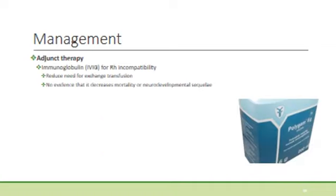In a patient with proven RH or ABO incompatibility, immunoglobulin can be considered to reduce the need for exchange transfusion. There is little evidence that it decreases mortality or neurodevelopmental sequelae, but as exchange transfusion is to be avoided due to its complications, this treatment modality is often tried.